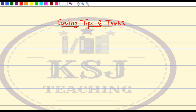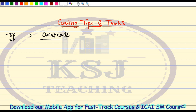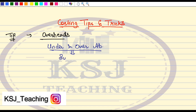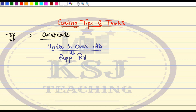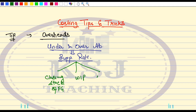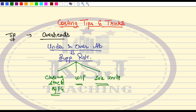So what is the tip? The tip is related to the overheads chapter. In overheads, we have studied about under and over absorption. While calculating under and over absorption, we calculate a supplementary rate. For the supplementary rate, we need three things. What are the three things? We need the closing stock of finished goods, we need WIP, and we need the cost of sales — that is the sale units.